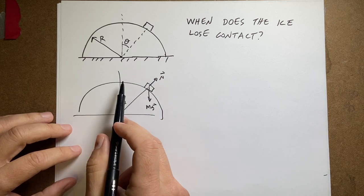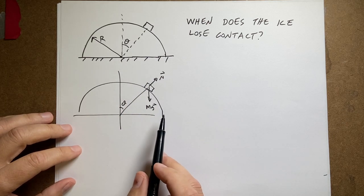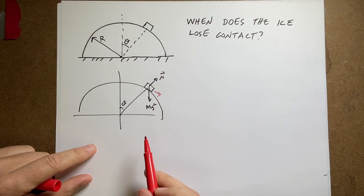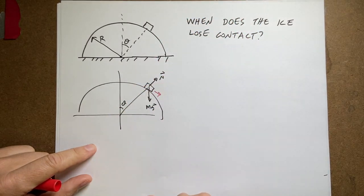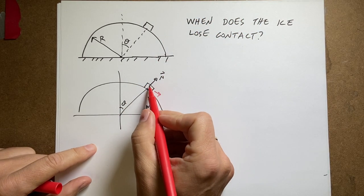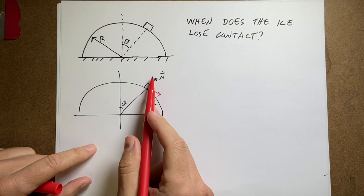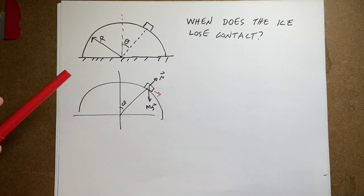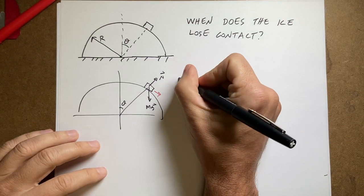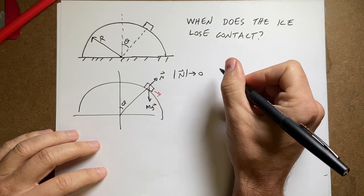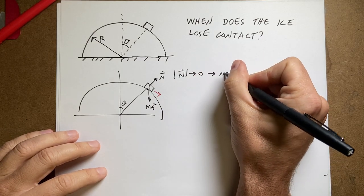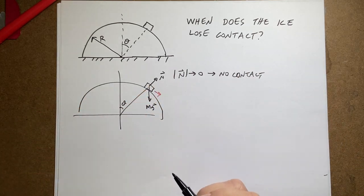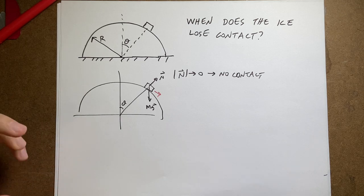And so two things happen. One, that normal force changes directions as it moves down. But two, as the puck starts to speed up as it moves down, then it's going to be accelerating this way. And so eventually, the acceleration will be such that there will be no normal force pushing it out. And once n goes to zero, when the magnitude of n goes to zero, it loses contact. No contact. So really, I want to find out when the normal force is equal to zero. That's the key.